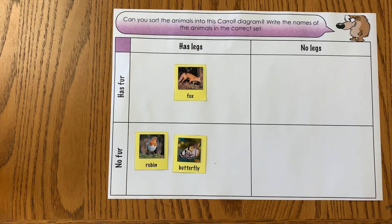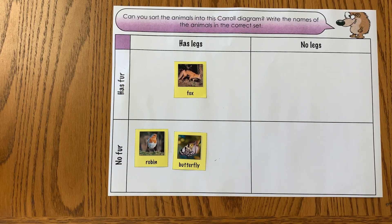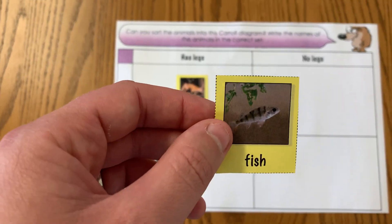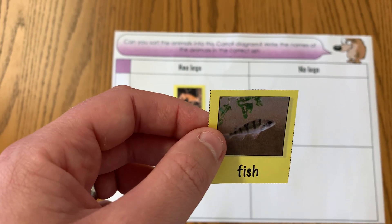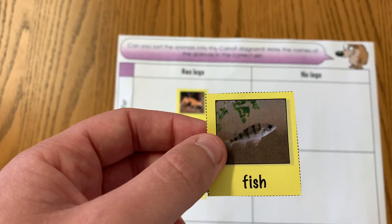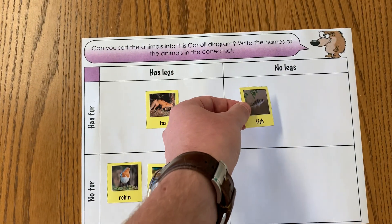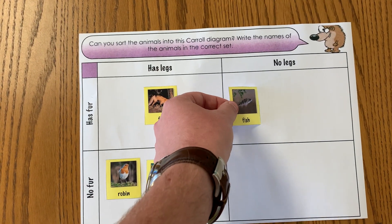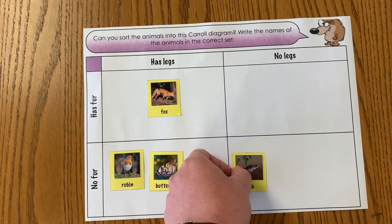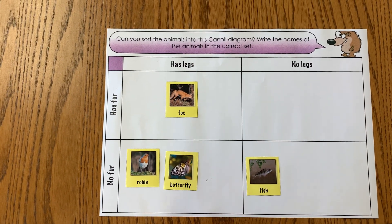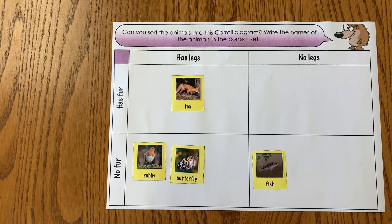And let me do one more — okay, I've got a fish. A fish has fins but doesn't have legs, and it's got scales, not fur. So can you see I've put it in the right place.